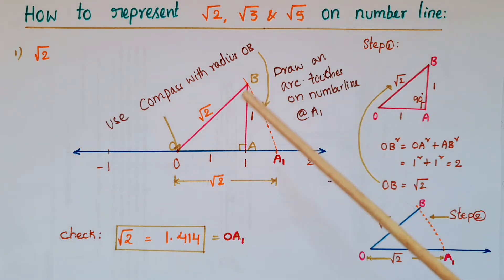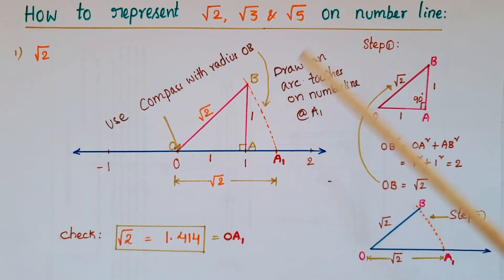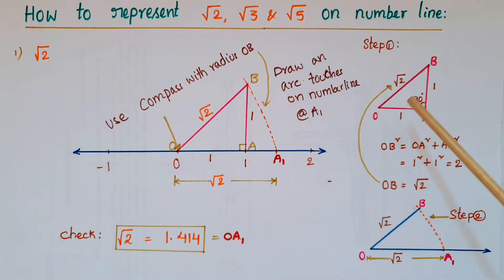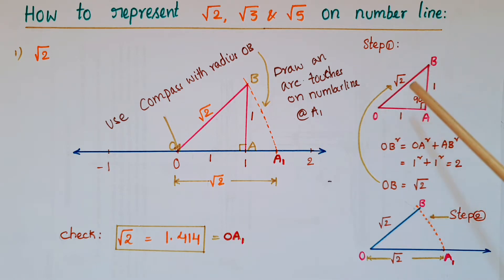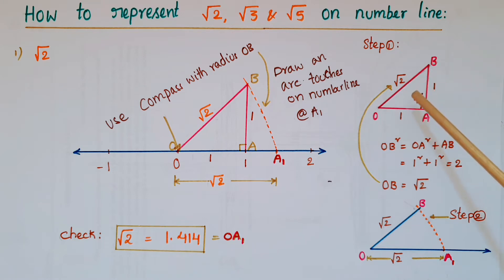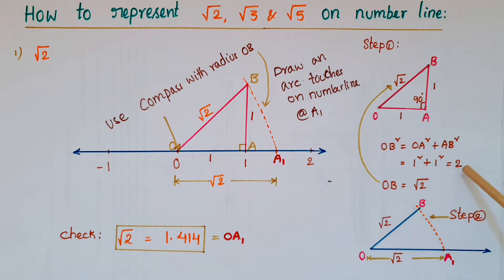First, I want to show how to represent root 2 on the number line. For that, we draw a right angle triangle OAB where OA is 1 unit and AB is 1 unit. Using the Pythagoras theorem: OB squared equals OA squared plus AB squared, which is 1 squared plus 1 squared equals 2. So OB is root 2.